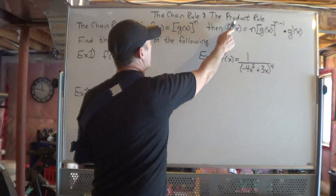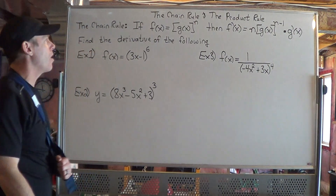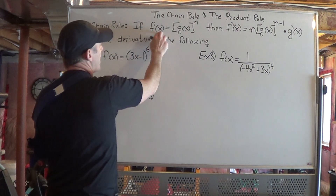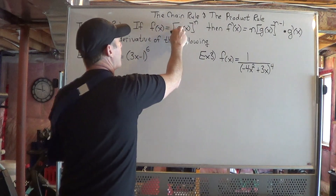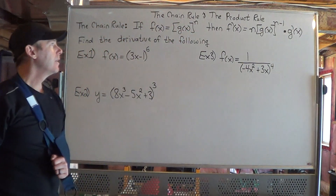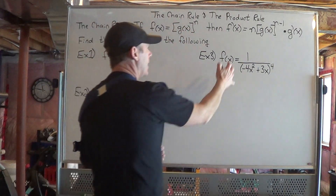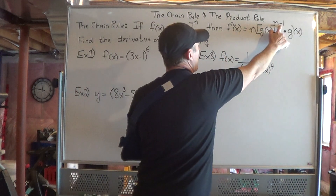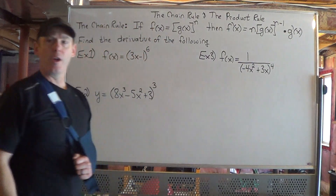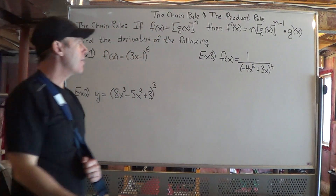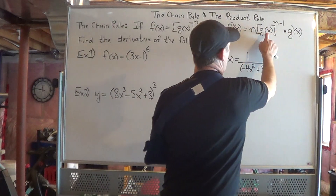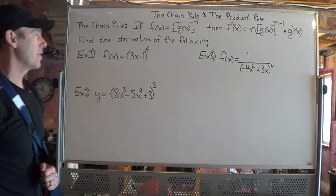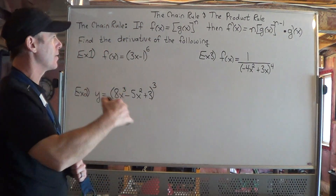The first one is called the chain rule, and the second one is called the product rule. The chain rule is this: if f of x is actually equal to some other function to the power of n, then it's kind of like the power rule where we bring the exponent down and knock one off the exponent. We still have our function, but we also multiply by the derivative of the function inside the brackets — whatever function is being taken to the power of n.